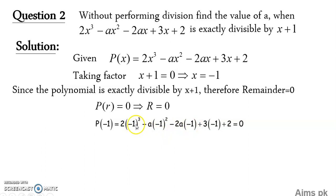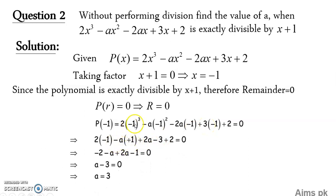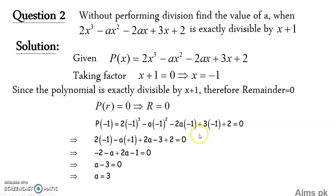Here is the polynomial. Insert the value x equals minus 1, since minus 1 represents r. When plugging in r equals minus 1: the cube of minus 1 is minus 1; multiplying 2 by minus 1 gives minus 2; the square of minus 1 is plus 1, and multiplying by minus a gives minus a; then minus times minus gives plus 2a; and plus times minus gives minus 3, minus 3, plus 2a, all equal to 0.